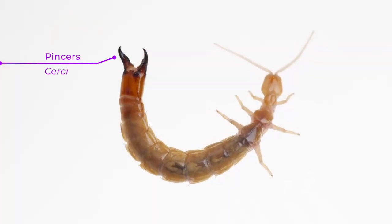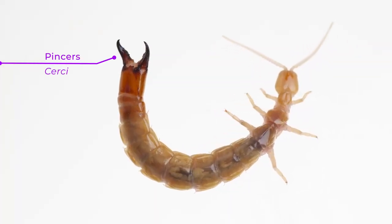Diplurans have no eyes but do have a pair of antennae. They also have a pair of abdominal appendages known as cerci — thin filaments in some species but robust and pincer-like in others such as Heterojapyx. Some diplurans are herbivorous, others omnivorous, but some species are carnivorous, and our specimen is carnivorous. Heterojapyx waits buried in the soil with only its pincers protruding above the surface, waiting patiently for prey to wander by.